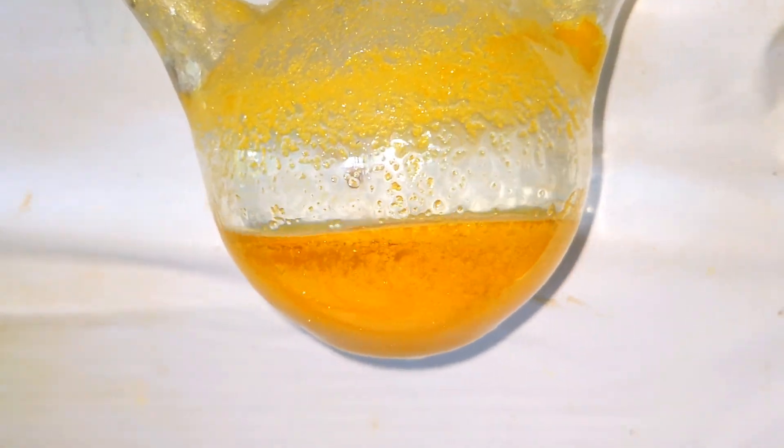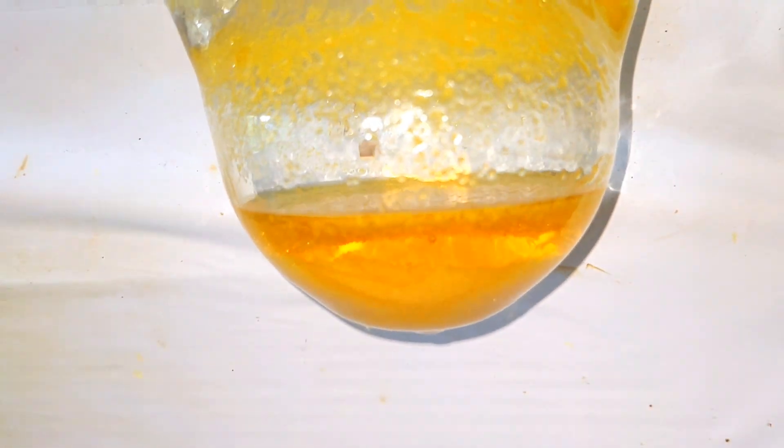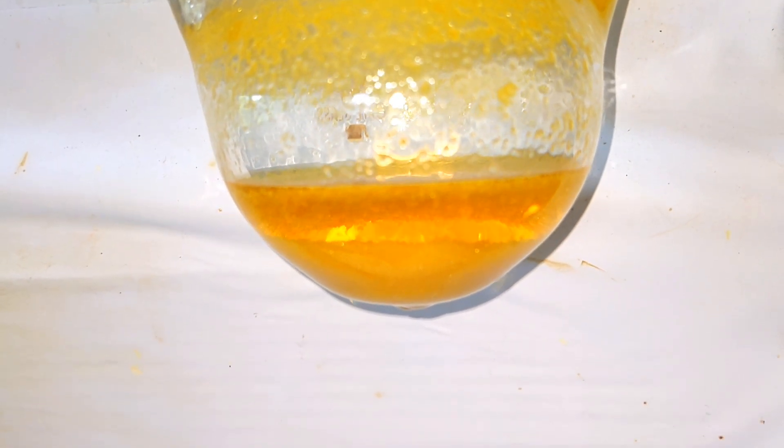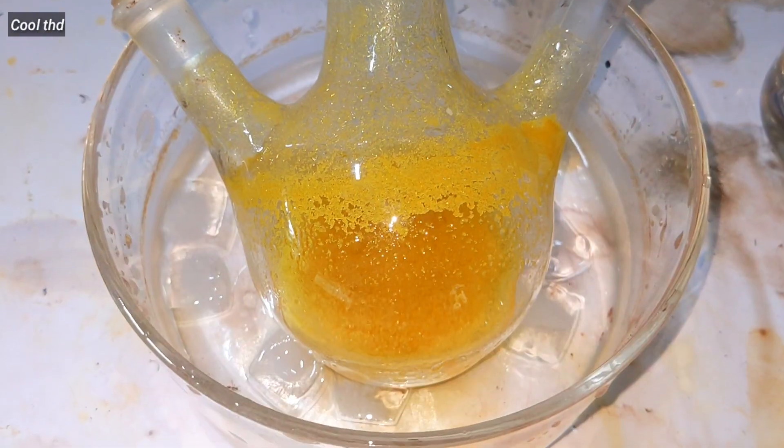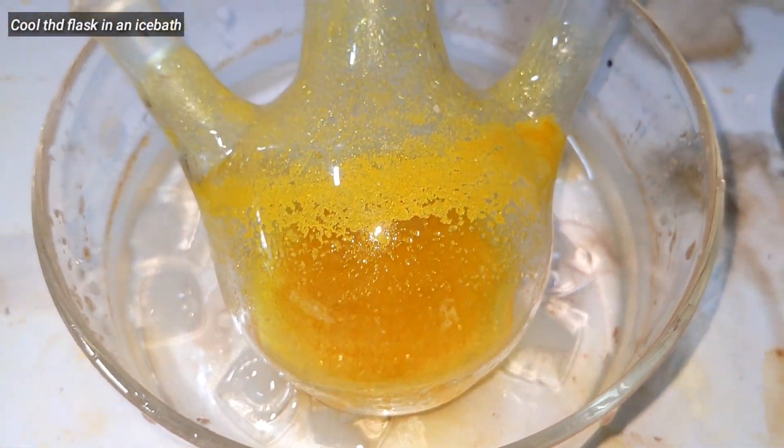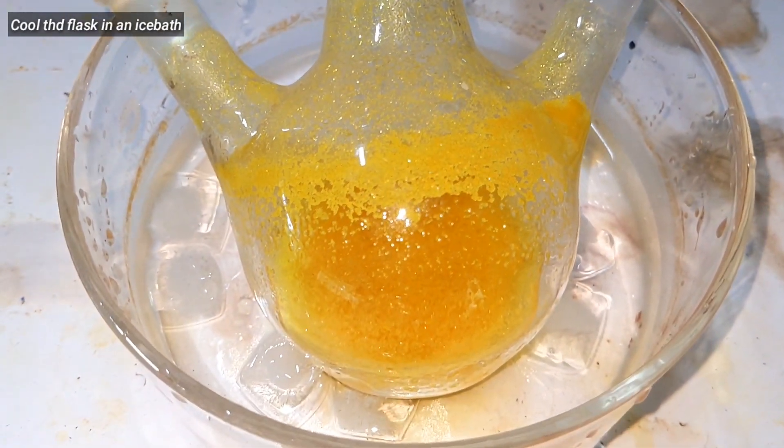After about 10 minutes we can take the flask out from the heat and let it cool down to room temperature. You can see the product settling down. Cool the flask in an ice bath so that maximum product precipitates out.